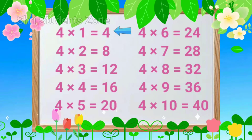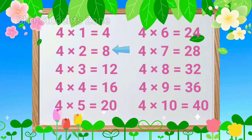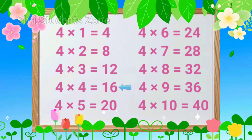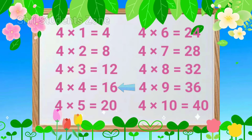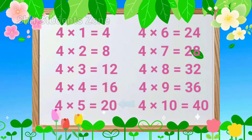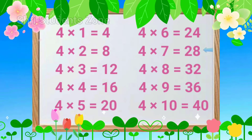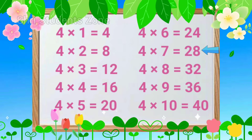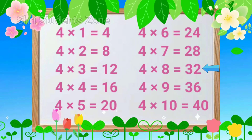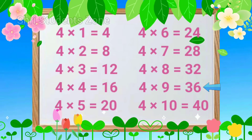4 1s are 4, 4 2s are 8, 4 3s are 12, 4 4s are 16, 4 5s are 20, 4 6s are 24, 4 7s are 28, 4 8s are 32, 4 9s are 36.